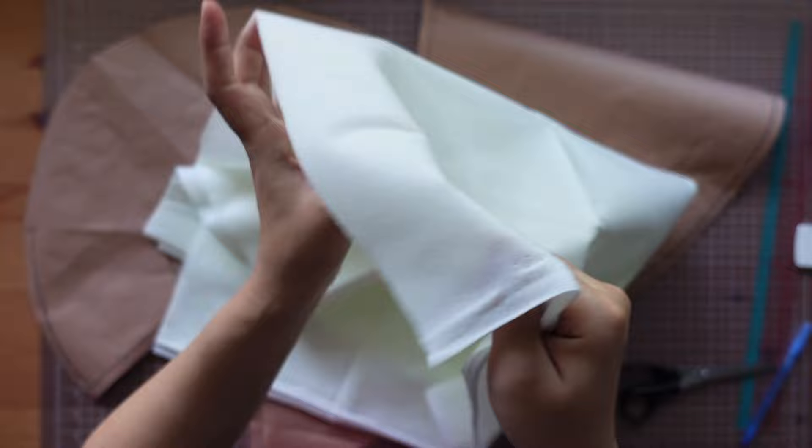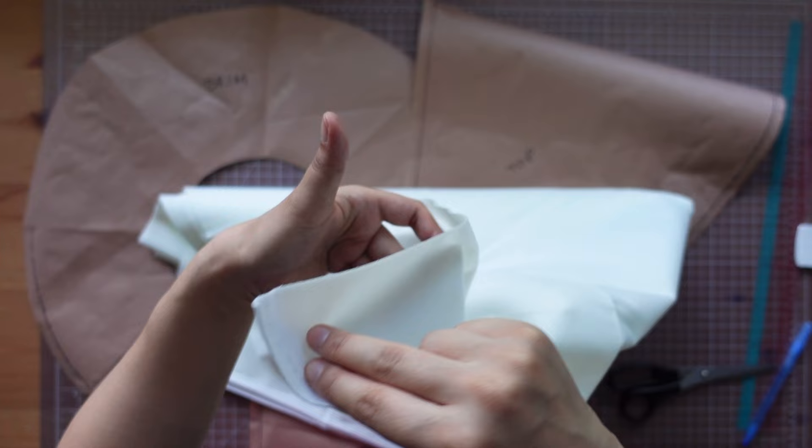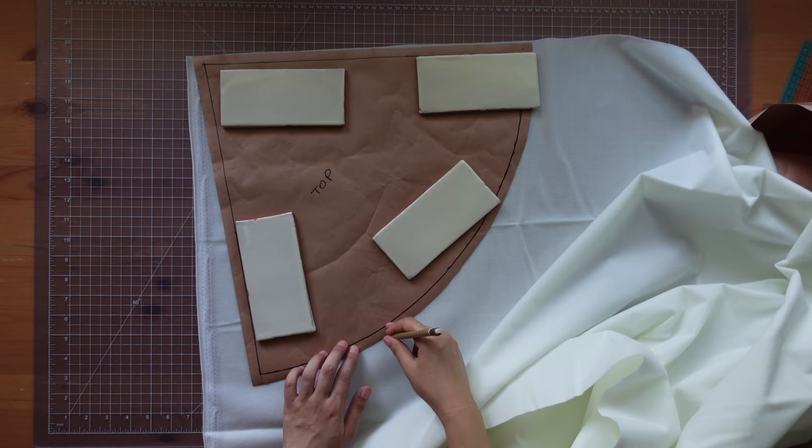I bought this glow in the dark fabric online. I'll leave the link in the description box. But this was my first time using this fabric. Its backside is smooth and has a vinyl-like feel to it, and the other side is soft and fuzzy. I cut out one piece for the cone top and two pieces for the brim.